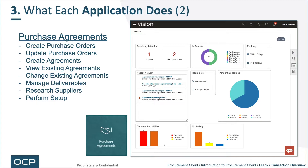Next, purchase agreements. This allows buyers the ability to create and update POs, create agreements, view agreements, change or manage agreements, manage deliverables, and research suppliers. In particular, that integration between qualifications and suppliers is nice — you can go research your suppliers based on their qualification. There are also some setup steps that you can perform there as well.